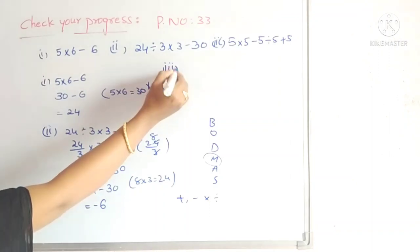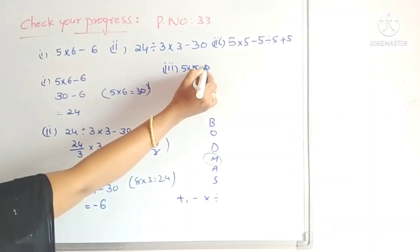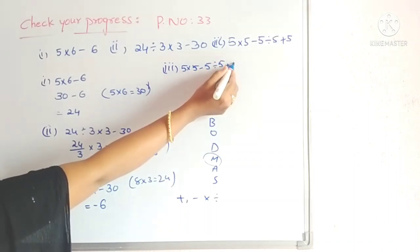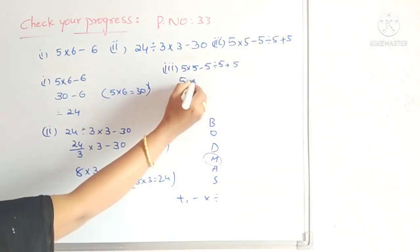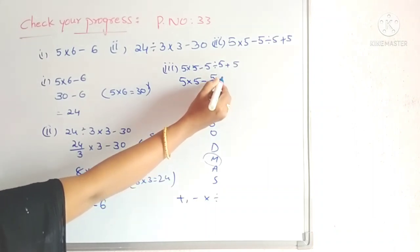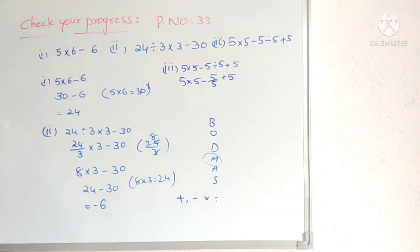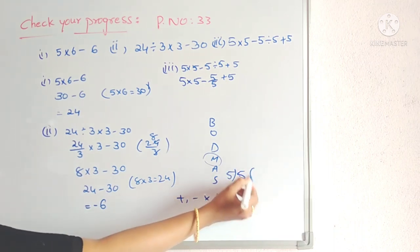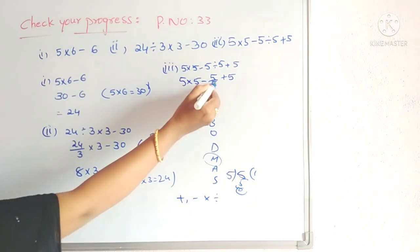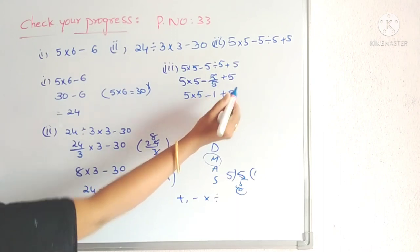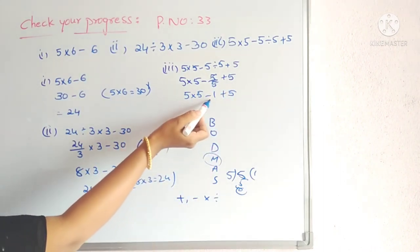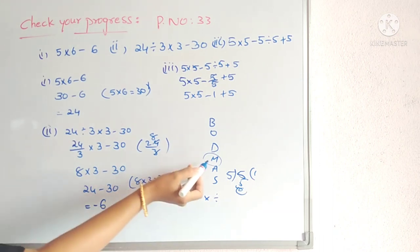In the third problem, all four operations are there: division, multiplication, addition, and subtraction. By BODMAS, first we calculate division. 5 ÷ 5 = 1. So we get 5 × 5 − 1 + 5. Now we have multiplication, subtraction, and addition. First do multiplication: 5 × 5 = 25, giving 25 − 1 + 5.